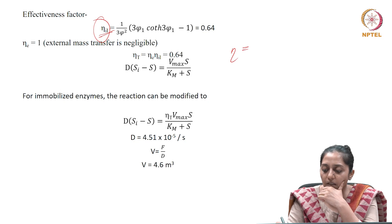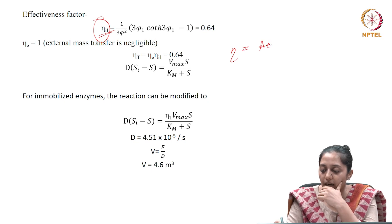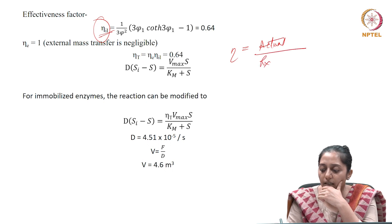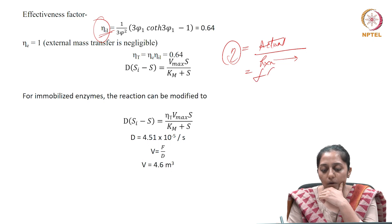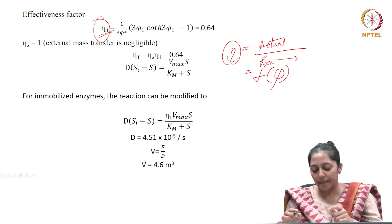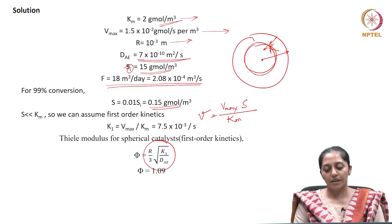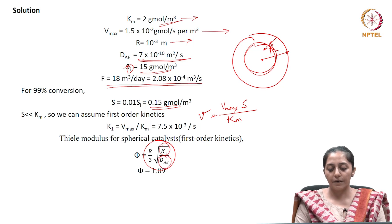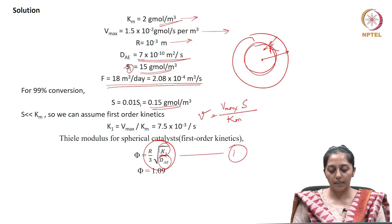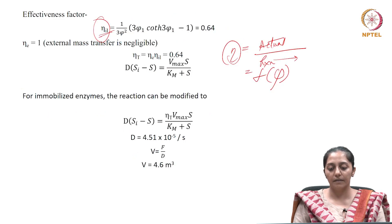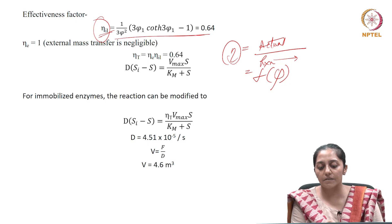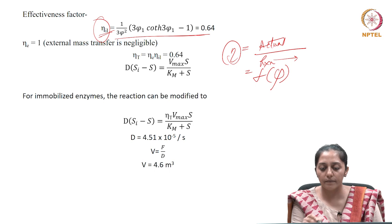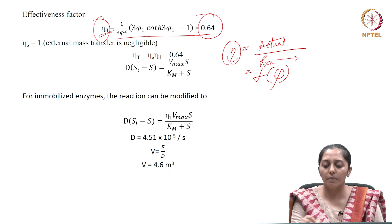The effectiveness factor is the ratio of actual reaction rate to the reaction rate without diffusion. It's a function of Thiele modulus, which is calculated from the reaction rate and diffusivity for first-order kinetics, where R is the bead radius. The effectiveness factor value is 0.64.